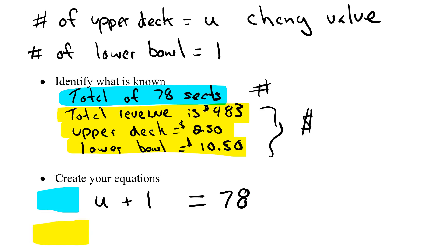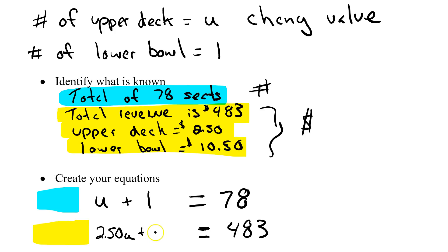Now equation two, dealing with money. When I sell all these seats, I'll make $483 — that goes on the right side. For every upper deck seat I sell, I make $2.50, so that's a multiplication: $2.50 times U. Plus my $10.50 times L for the lower bowl seats. So 2.50U plus 10.50L equals $483. For every upper deck seat I make $2.50, for every lower bowl seat I make $10.50, and when I add these two together I should get $483. So I've made my two equations.